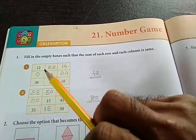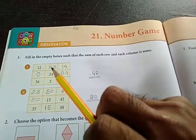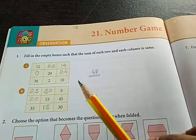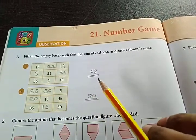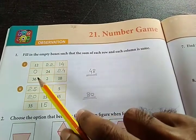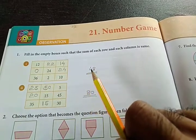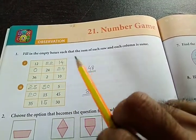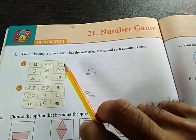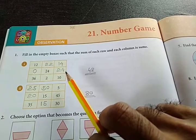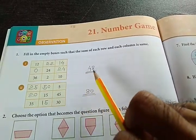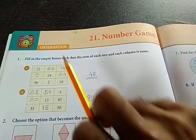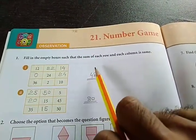Here this first column you can see is empty. If you look at this column horizontally and vertically, the addition of each column and each row should be 48. So here they have already given 12 and 36, so their addition is 48. Then 22 plus 2 equals 24, and 24 plus 24 equals 48.